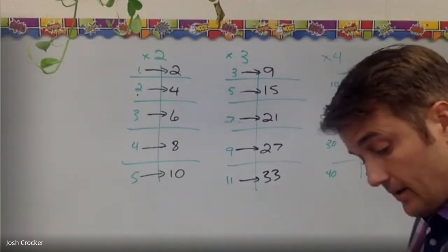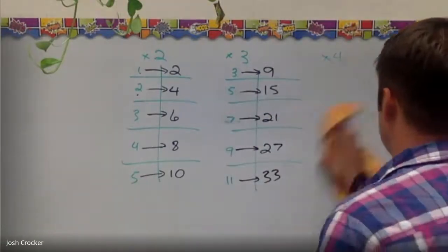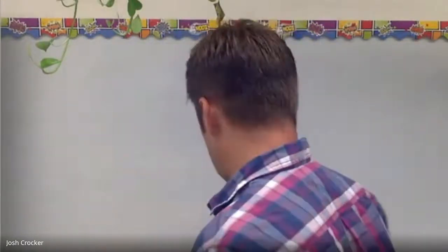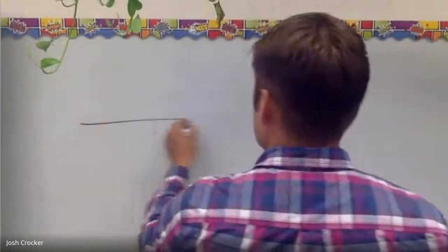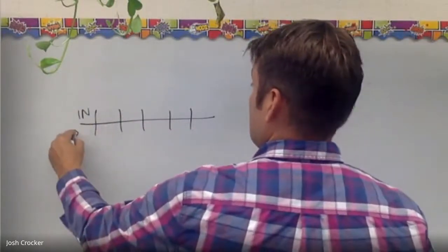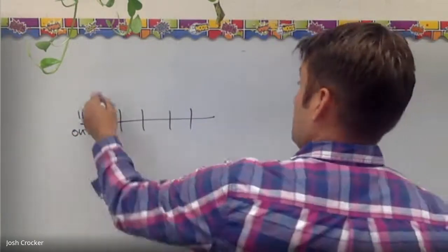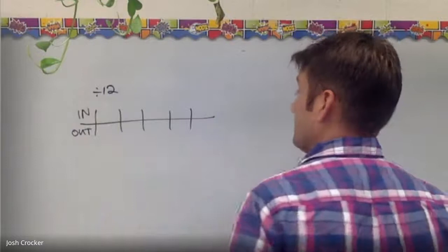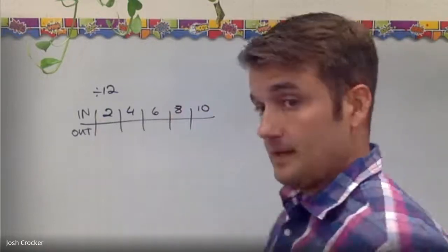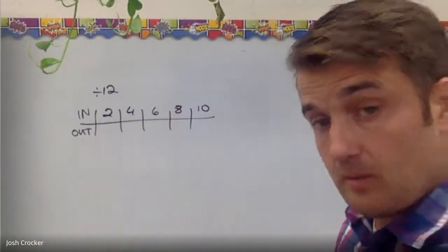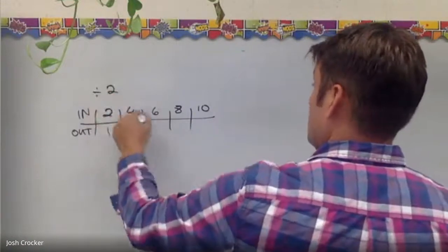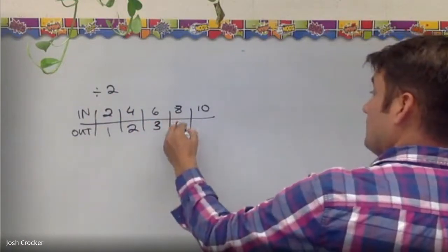Now on the opposite side of that you will have division input output tables. And let's do one horizontally because sometimes they will draw the table like this to where it's input output. So let's just say that my rule is going to be divide by 2. So maybe I've got numbers like this 2, 4, 6, 8, and 10. So if I divide them by 2 because that's my rule. 2 divided by 2 is 1, 4 divided by 2 is 2, 6 divided by 2 is 3, 4, 5.